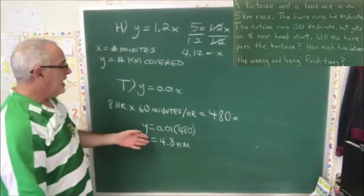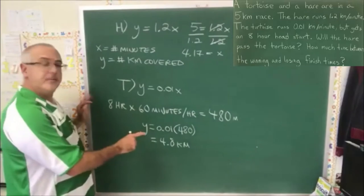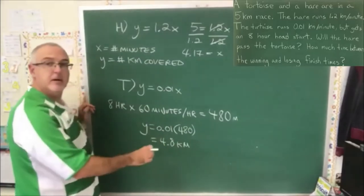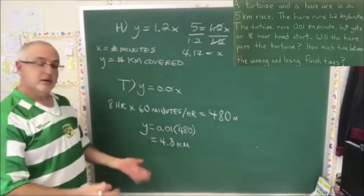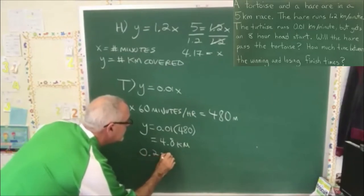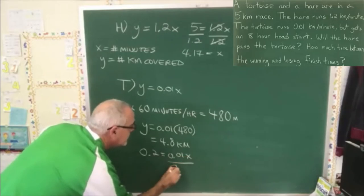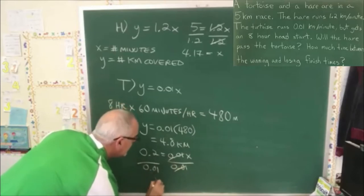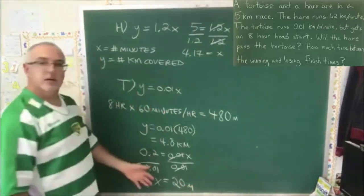The hare is fast. Now how long is the tortoise taking to cross the finish line? Remember, the tortoise had an 8-hour head start and is now at the 4.8 kilometer mark when the hare starts. So the tortoise only has 0.2 kilometers left. I'm going to plug that into the same equation: 0.2 equals 0.01x, we divide both sides by 0.01, these cancel, x is equal to 20. It's taking the tortoise 20 minutes to cross the finish line after the hare started.